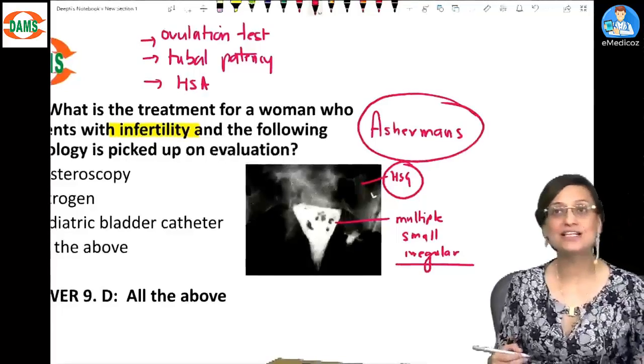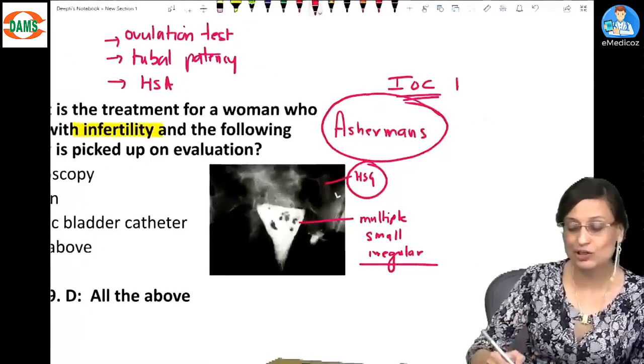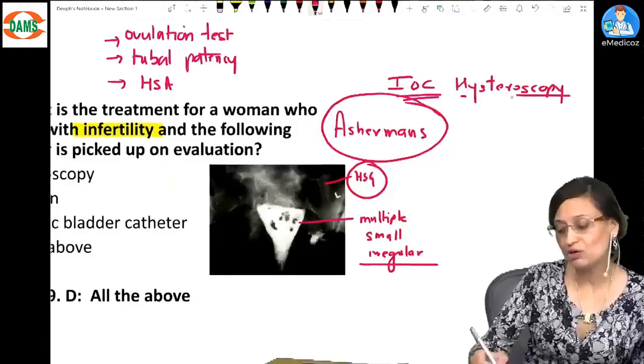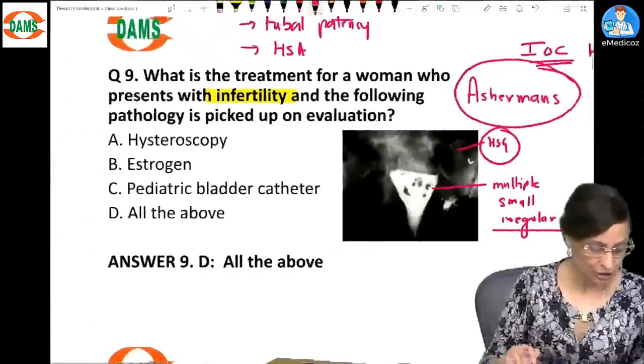So what is the investigation of choice in Asherman's? Yes, it is going to be hysteroscopy. And you all know what we are going to do in hysteroscopy. It is both diagnostic and therapeutic. That's why it is the IOC.